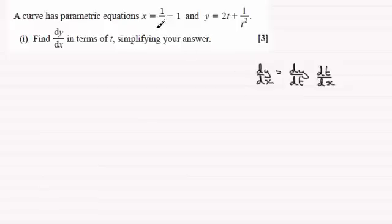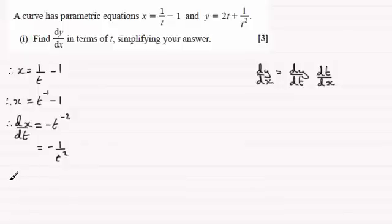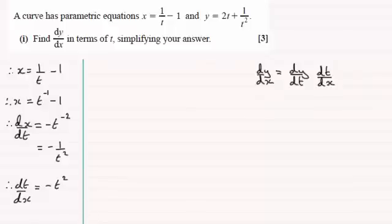Starting with x equalling 1 over t minus 1, I'll write this as t to the power minus 1 minus 1. Differentiating with respect to t, dx by dt equals minus t to the power minus 2, which I can write as minus 1 over t squared. Reciprocating this gives dt by dx equals minus t squared.